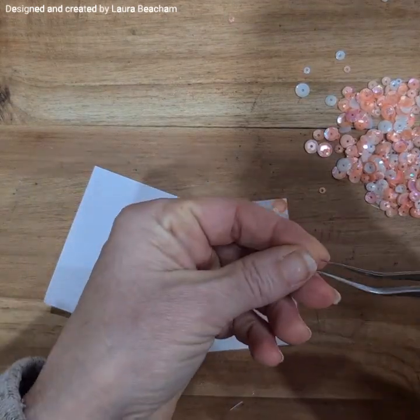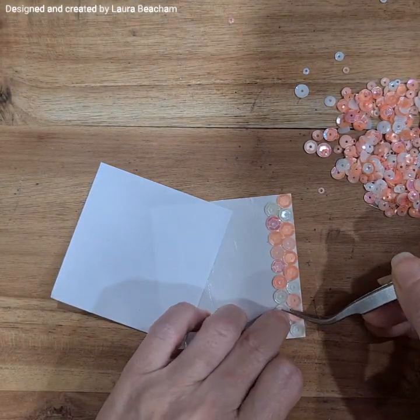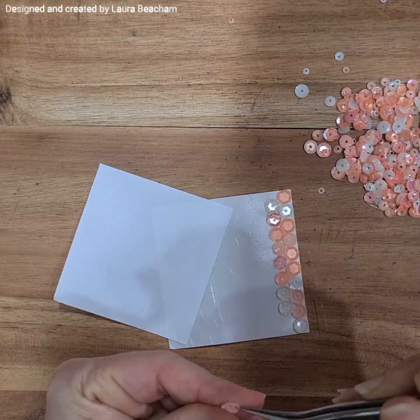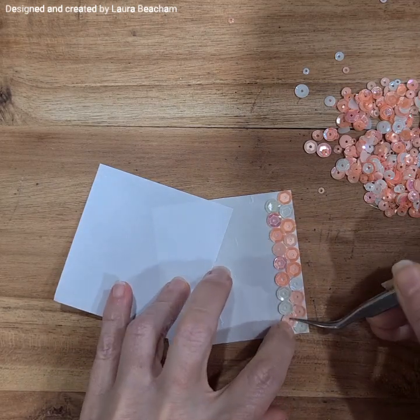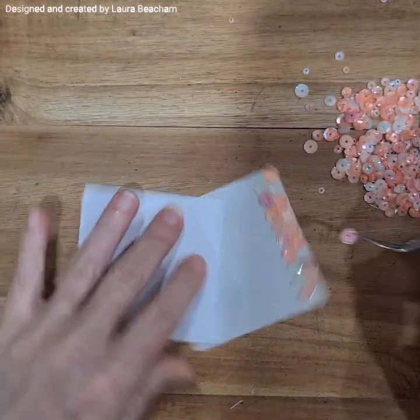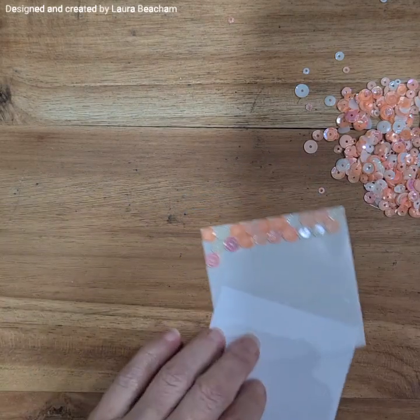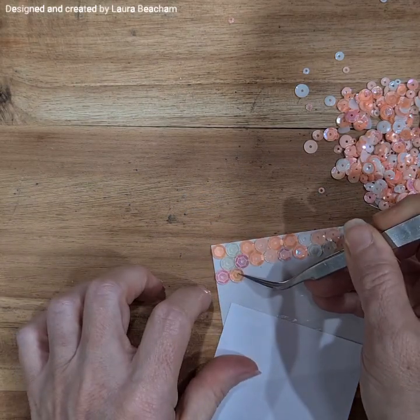I'm just going to fill this whole sheet up until it's full with the sequins and then I will come back to you and I will show you how to put it together with ease. After doing it a couple of times I've discovered the best way, so I'm going to show you how to do it with ease. Just watch along as I speed this up and fill this whole piece of adhesive square in with these sequins.